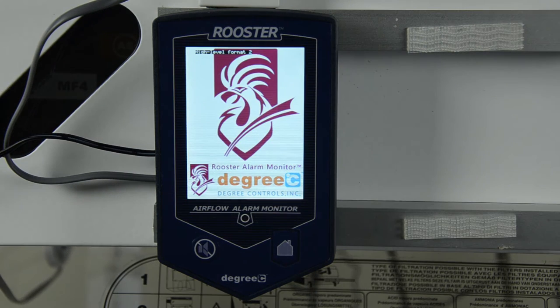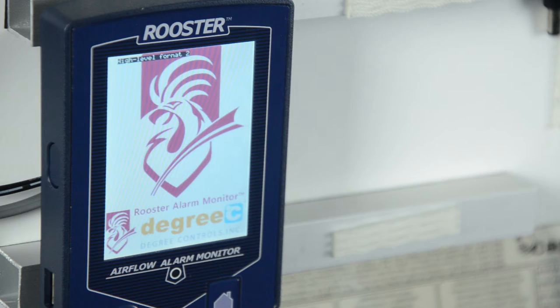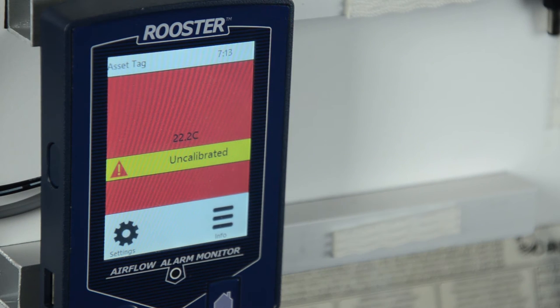Before calibrating, you'll first need to sync your Rooster up with local date and time settings. This will help you keep track of future calibrations.